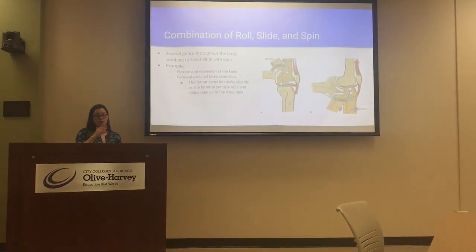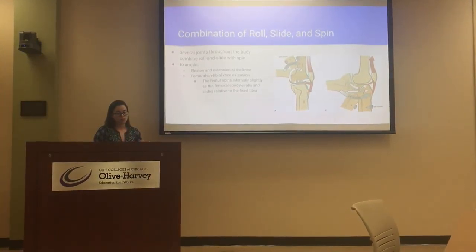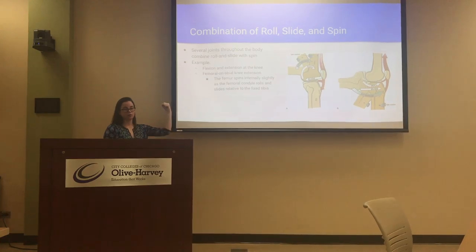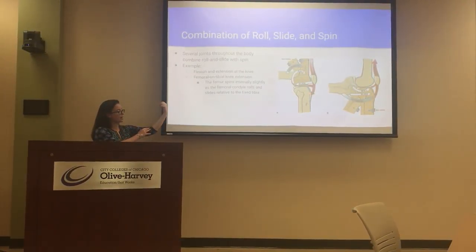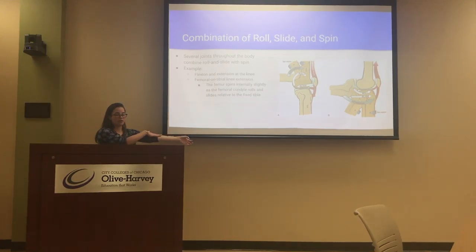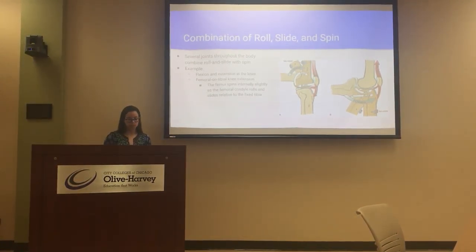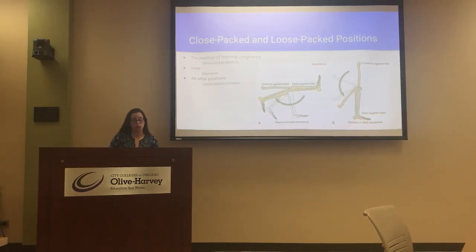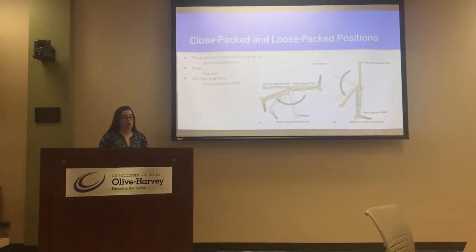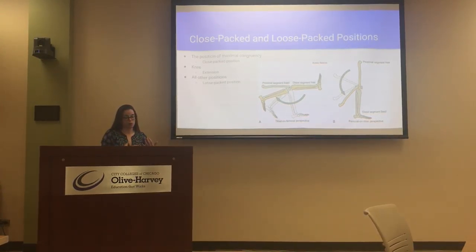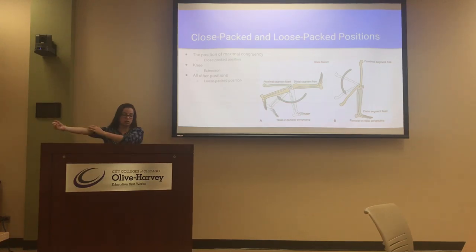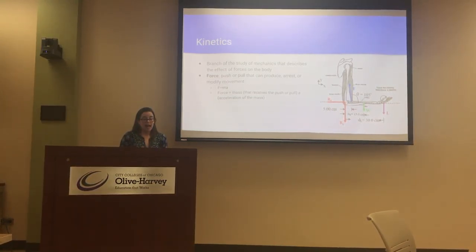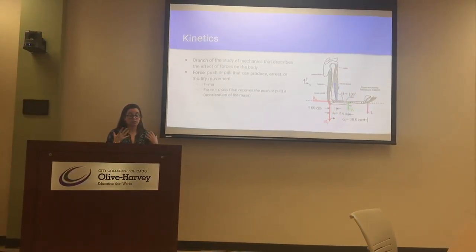We also have the combination of all of those — an example would be extension and flexion. As I extend out, I'm also going to have a slight rotation to my arm. Very similar to the idea of open and closed chains are the closed-packed and loose-packed positions. A closed-packed position would be extension — because we are tight and tough — and everything else would be loose.